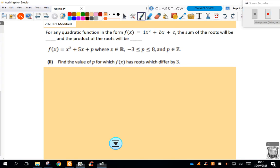In this class I'm going to look at the second part of question 1 from Thursday's class. For any quadratic function in the form x squared, notice the leading coefficient is 1, plus bx plus c.